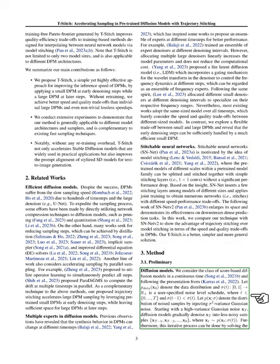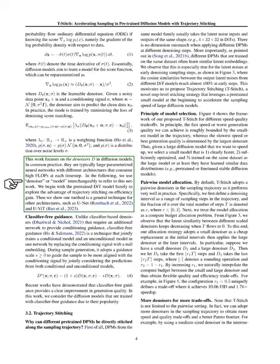Regarding the basics of diffusion models, we consider score-based diffusion models in continuous time. The process involves gradually denoising a sample from high-variance Gaussian noise to less noisy samples by solving the probability flow ordinary differential equation, given the score function. The goal is to learn a model for this score function, which can be reparameterized as a learnable denoiser. The denoiser aims to predict clean data from noisy data points, trained by minimizing the loss of denoising score matching. Typically, these denoisers are large neural networks consuming high computational resources at each time step.